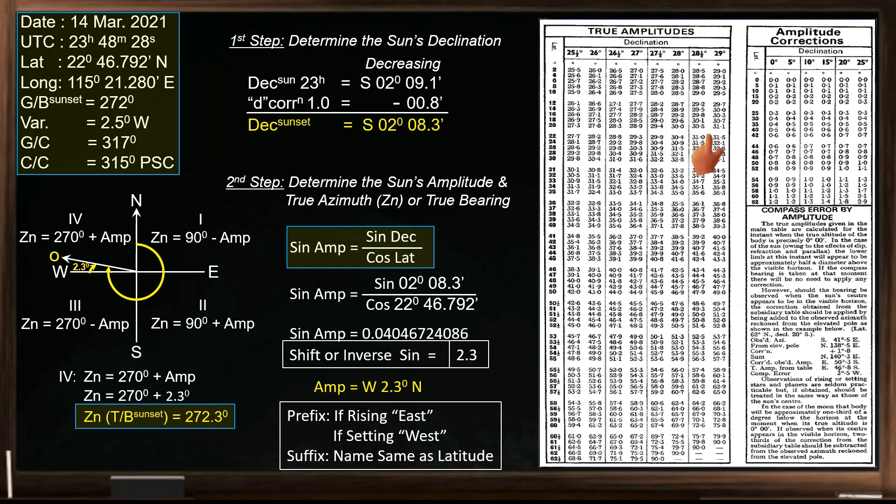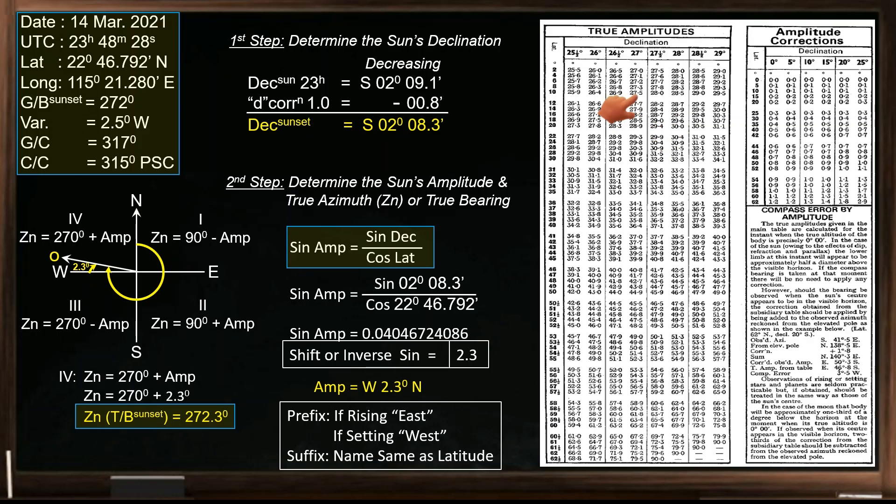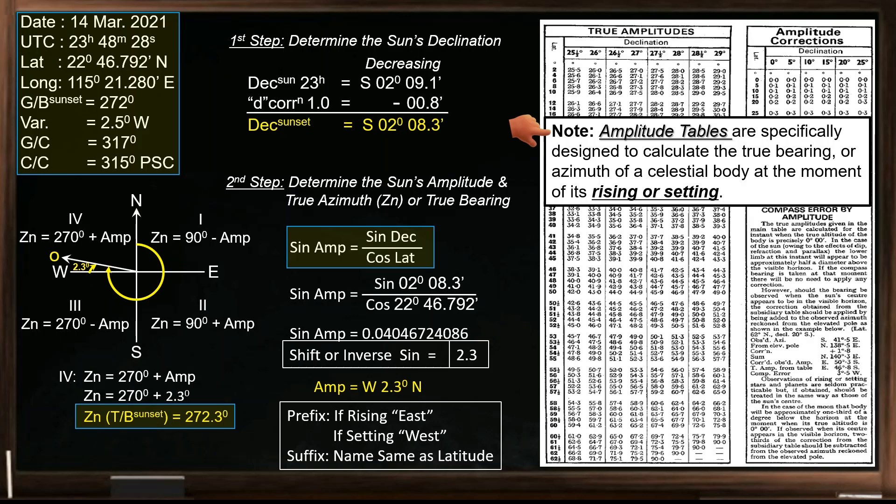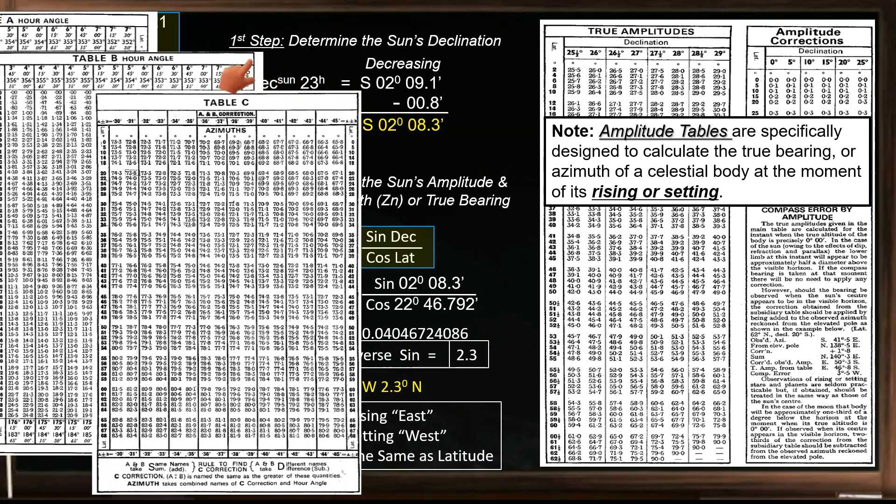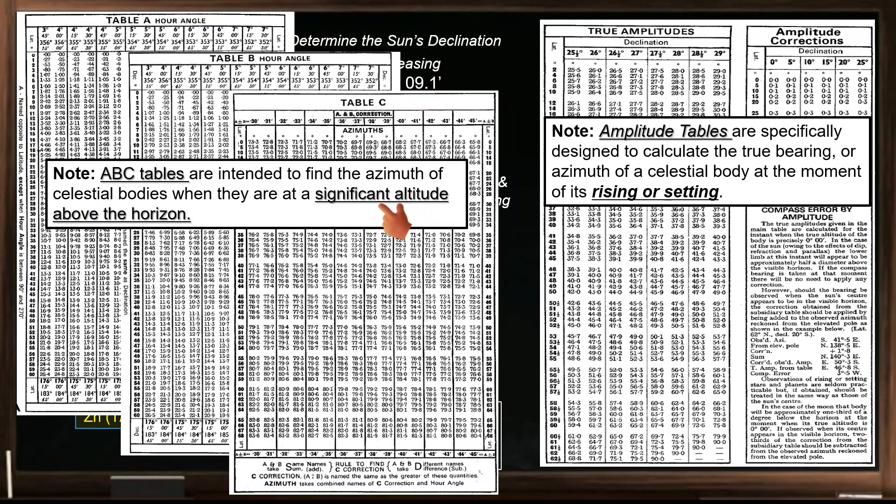We'll be utilizing amplitude tables to determine the sun's amplitude at sunset. Amplitude tables, such as those found in Nori's nautical tables, provide pre-computed values that simplify this process, offering a practical alternative when computational tools are unavailable. Understanding the distinction between these tables and ABC tables ensures accurate application in celestial navigation.